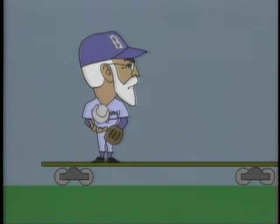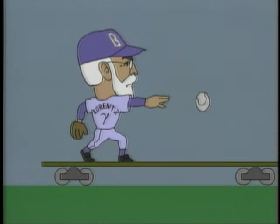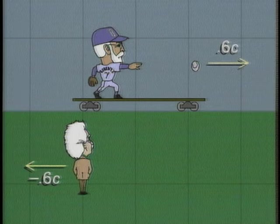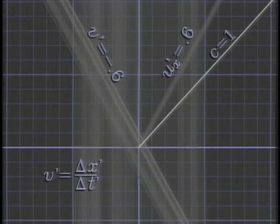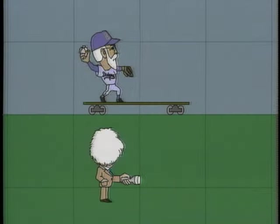Suppose Henry throws his fastball on his fast flat car. Does Albert see it move faster than light? Look at the space-time diagram. A moving ball is a diagonal line. The speed is the slope. Even on Albert's grid, we find nothing can travel faster than light.